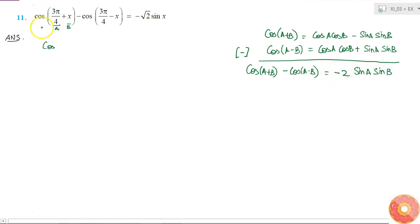So now if I put those values here, my left hand side will be equal to minus 2 sin a. What is a here? 3π/4. Sin(3π/4) into sin b, sin x.